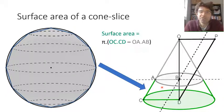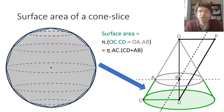So in modern terms, what we find out is that the surface area of the cone slice is π—that's the factor that we have to add in now—multiplied by AC, so the side of the cone that's left, multiplied by CD plus AB, the sum of the radii at the top and bottom.